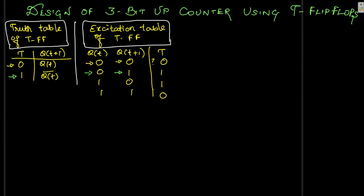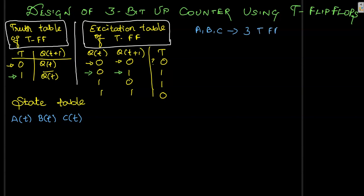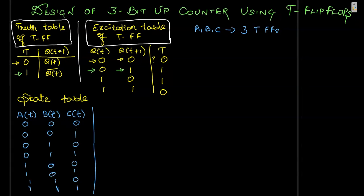In this 3-bit up-counter design, we first want to generate the state table, which gives our requirement. We name the 3 bits A, B, and C — so we have flip-flops A(t), B(t), and C(t). With 3 flip-flops, we get 8 different combinations, starting from 0,0,0. We list all 8 combinations and fill out these states.